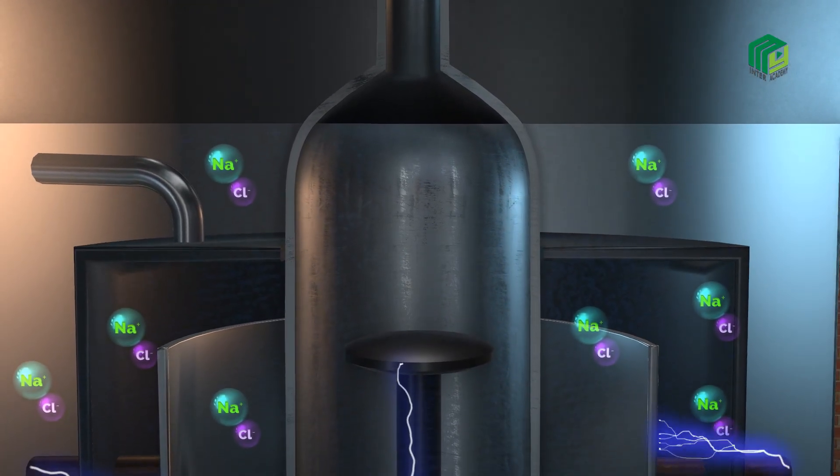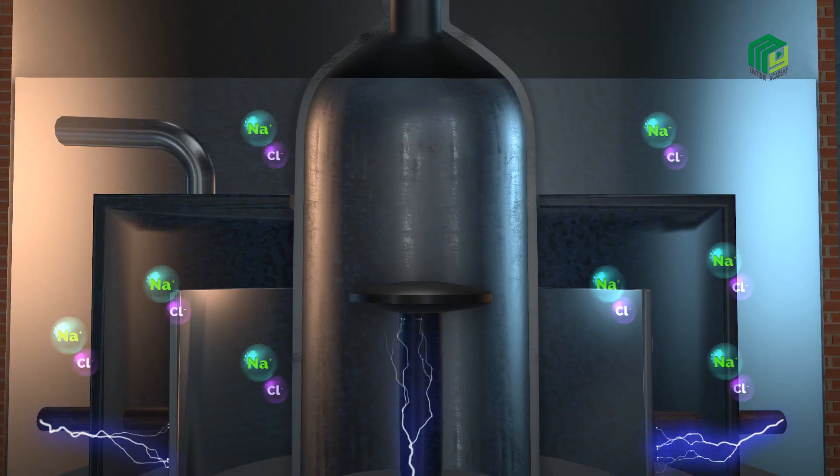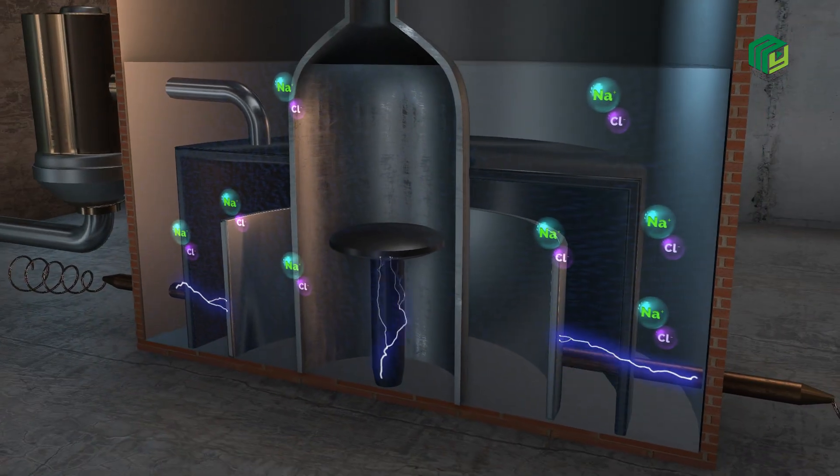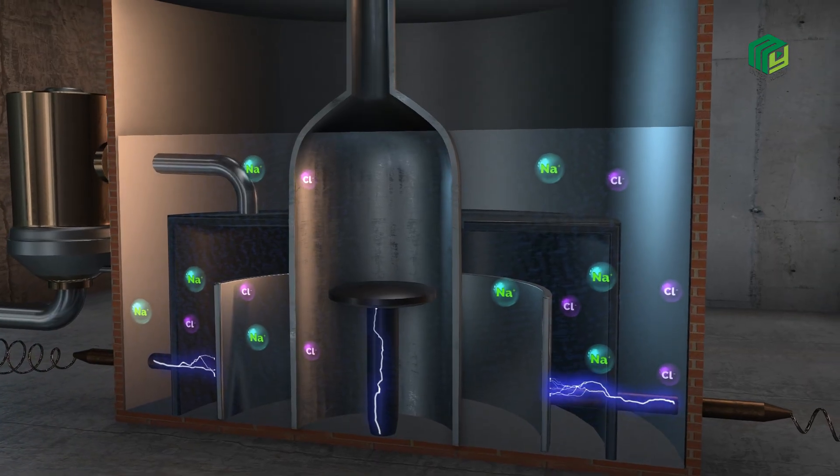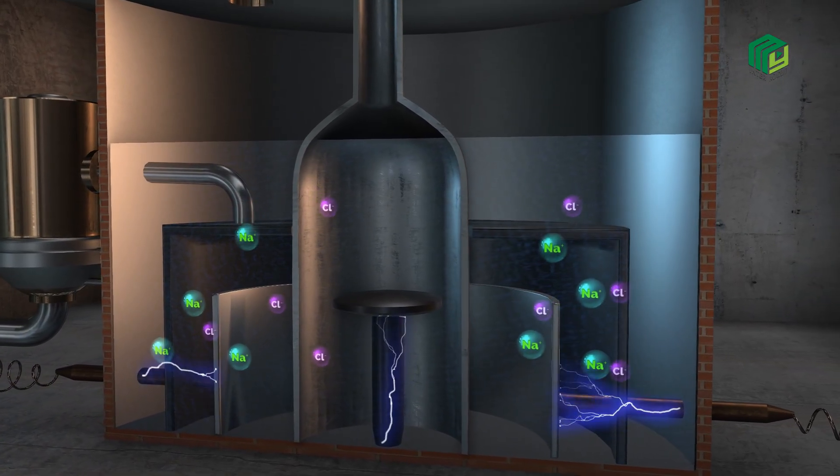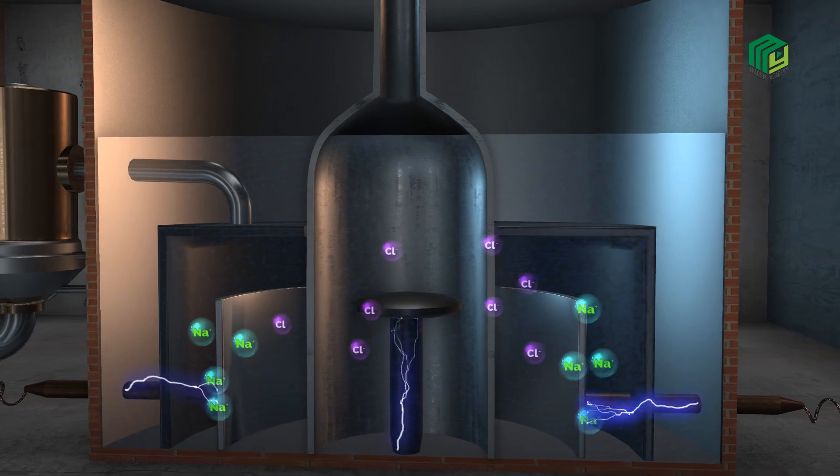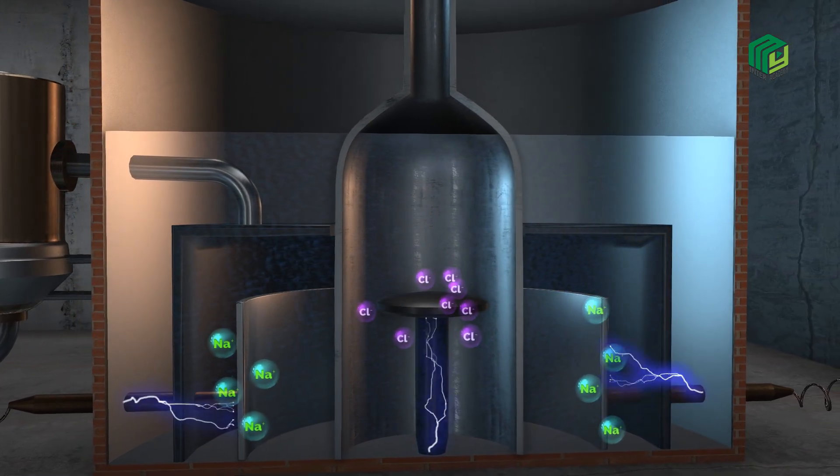When electricity is passed through the cell, NaCl breaks down into its components. Sodium ions are collected at the cathode and chlorine ions move towards the anode.